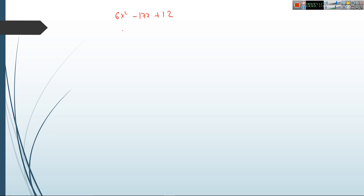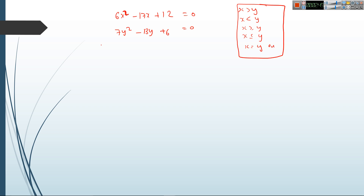Let's discuss the first question. It's not that simple but you will get these types of questions in your prelims exam. The equations are: 6x² − 17x + 12 = 0 and 7y² − 13y + 6 = 0. In the exam, you find the values of x and y, compare them, and choose the option: x less than y, x greater than y, x ≥ y, x ≤ y, x = y, or relationship cannot be established.